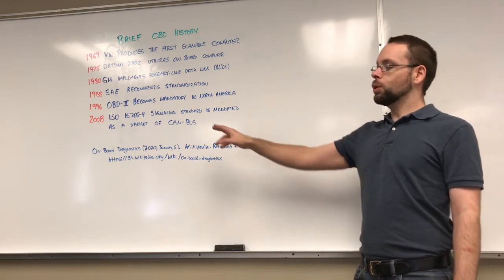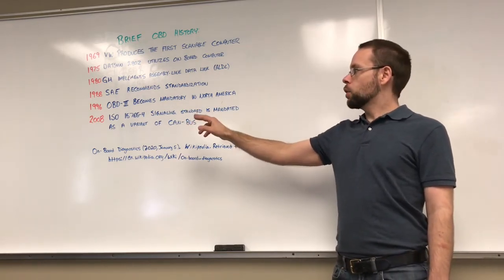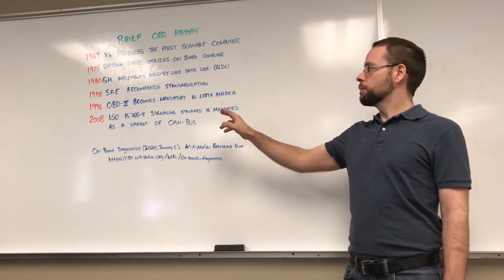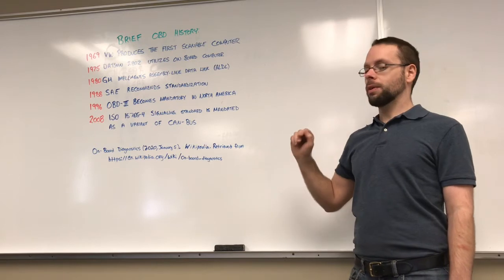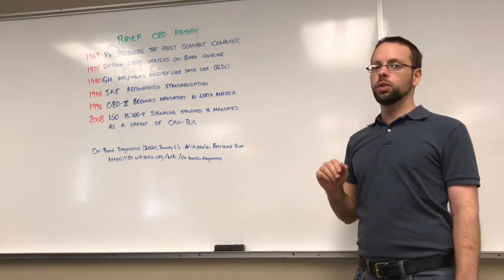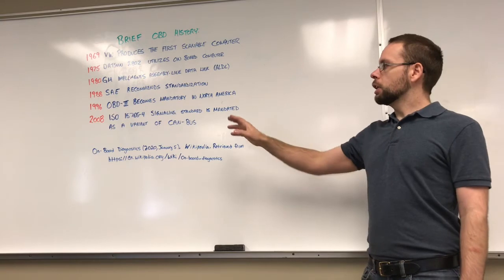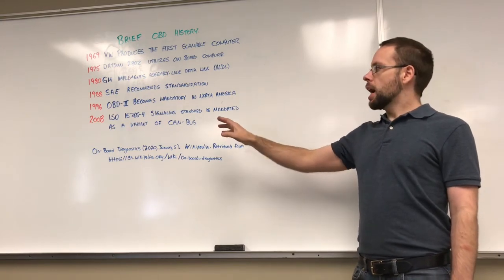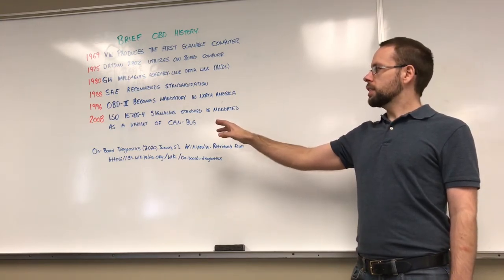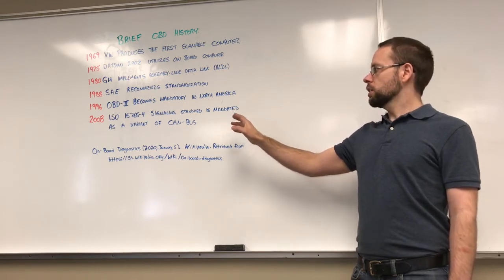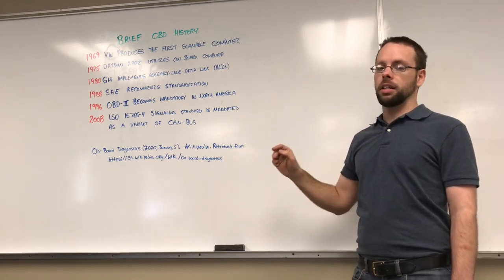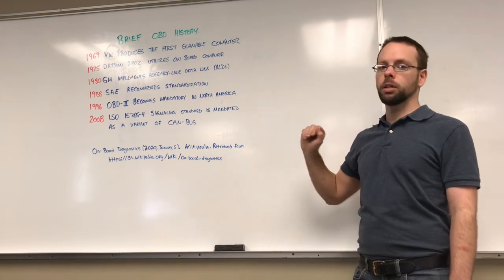That finally came true in 1996 as the OBD2 system becomes mandatory in North America. All vehicles sold in North America from 1996 onwards met this new standardized criteria. In 2008 the ISO 15765-4 standardization for signaling is mandated as a variant of the CAN bus system which we'll talk more about later.